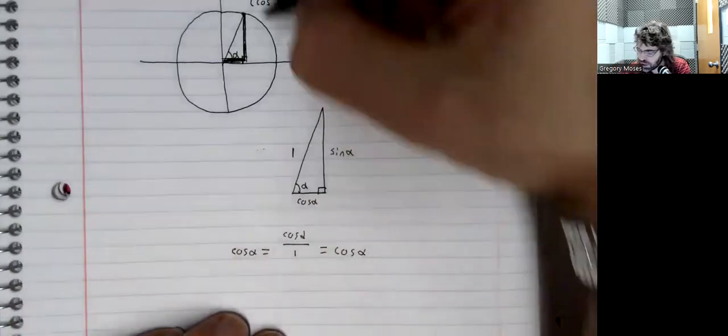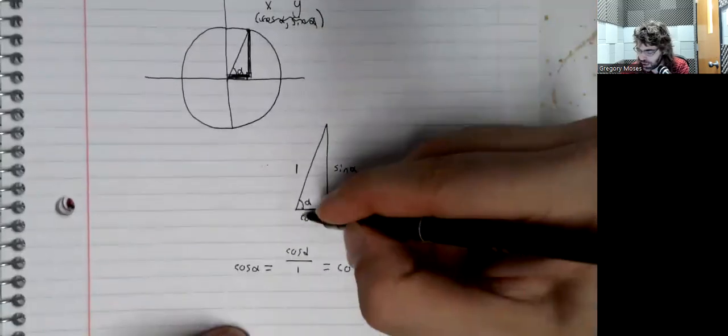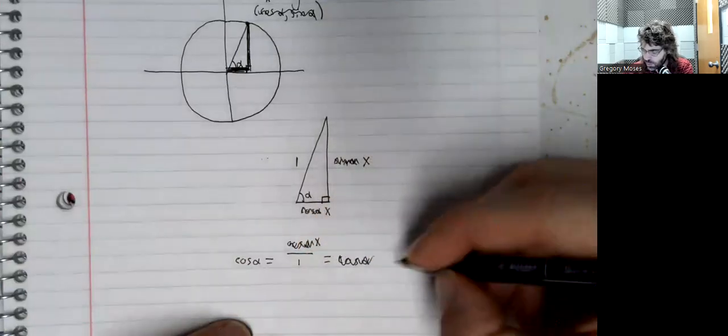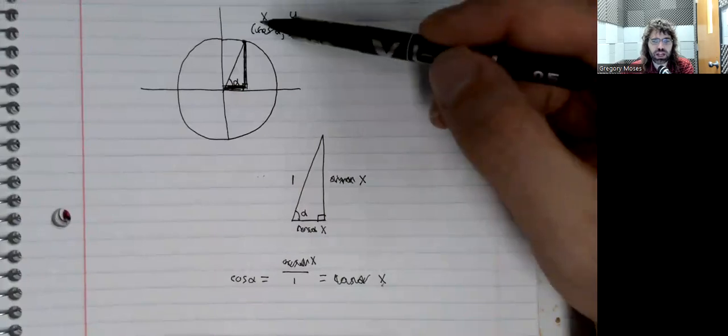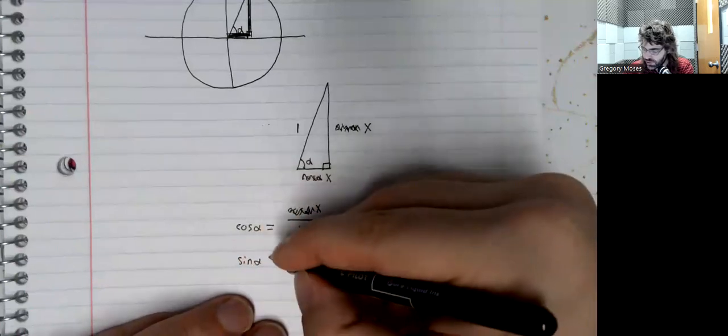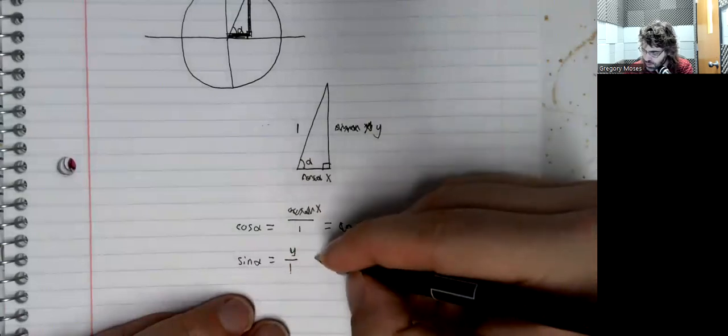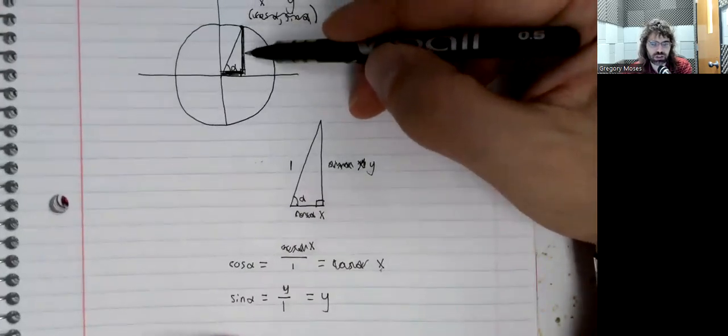Maybe it would actually be a little clearer if instead of cosine and sine, I just called this x and y. Then the cosine of alpha is x over 1, which is x. So if we use the right triangle definition to find the cosine, we do end up with the x-coordinate of this point. And if we use the right triangle definition to find the sine of alpha...